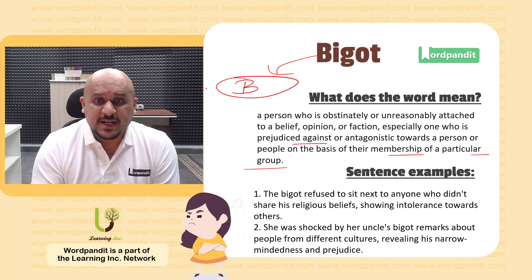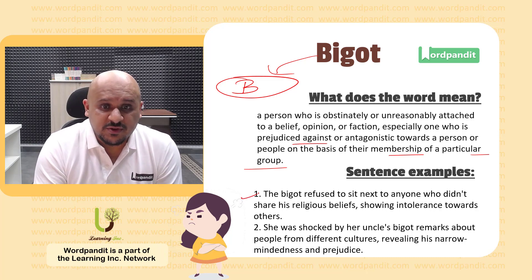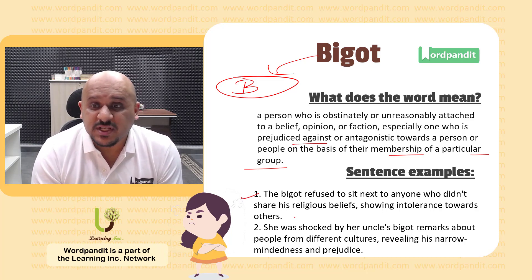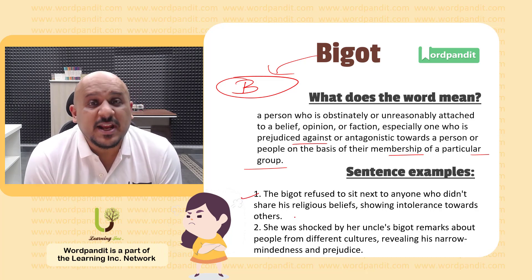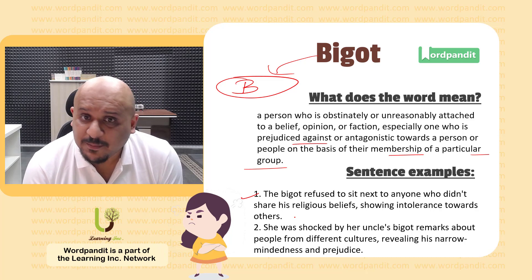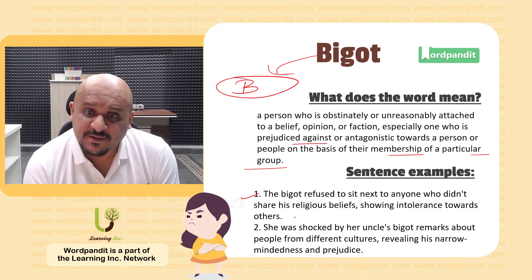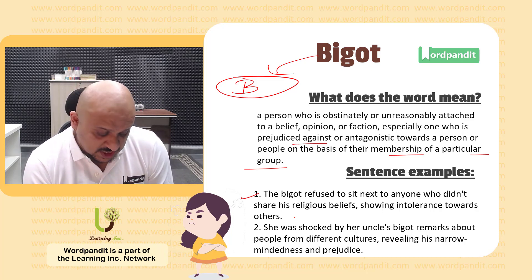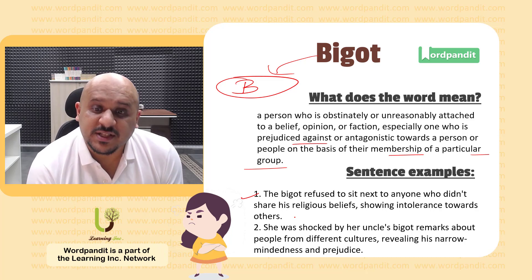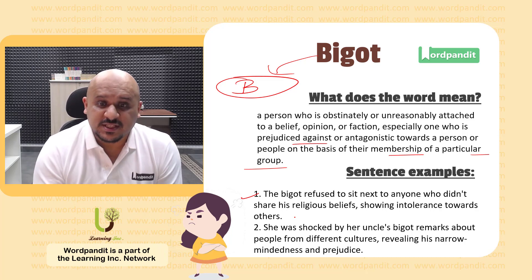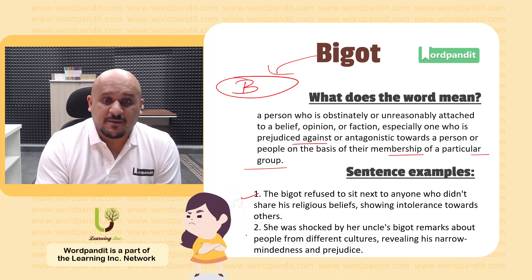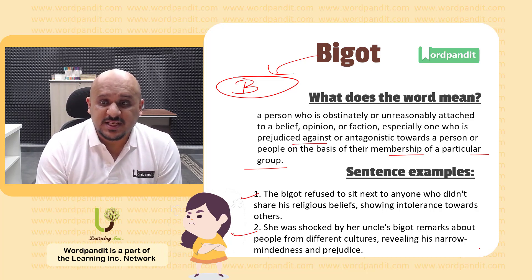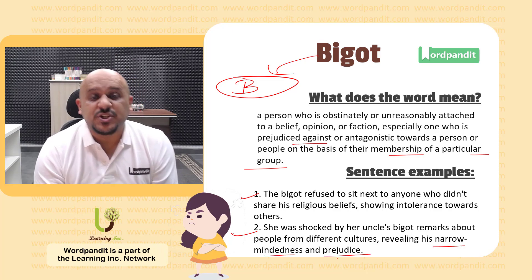Now in terms of usages, you can see the first usage reflects it. You can pause this video and go through the sentence. The first usage reflects a person who is a bigot essentially for he is against someone's religious beliefs. The second is against someone's culture. These reveal their narrow-mindedness, their prejudice.